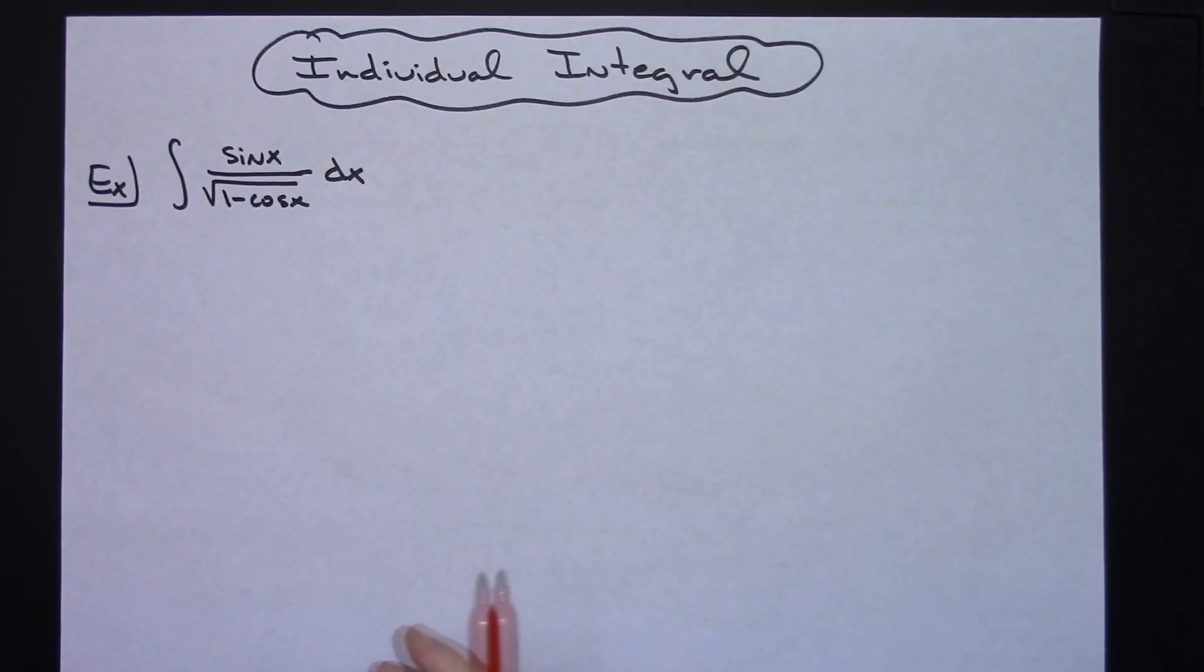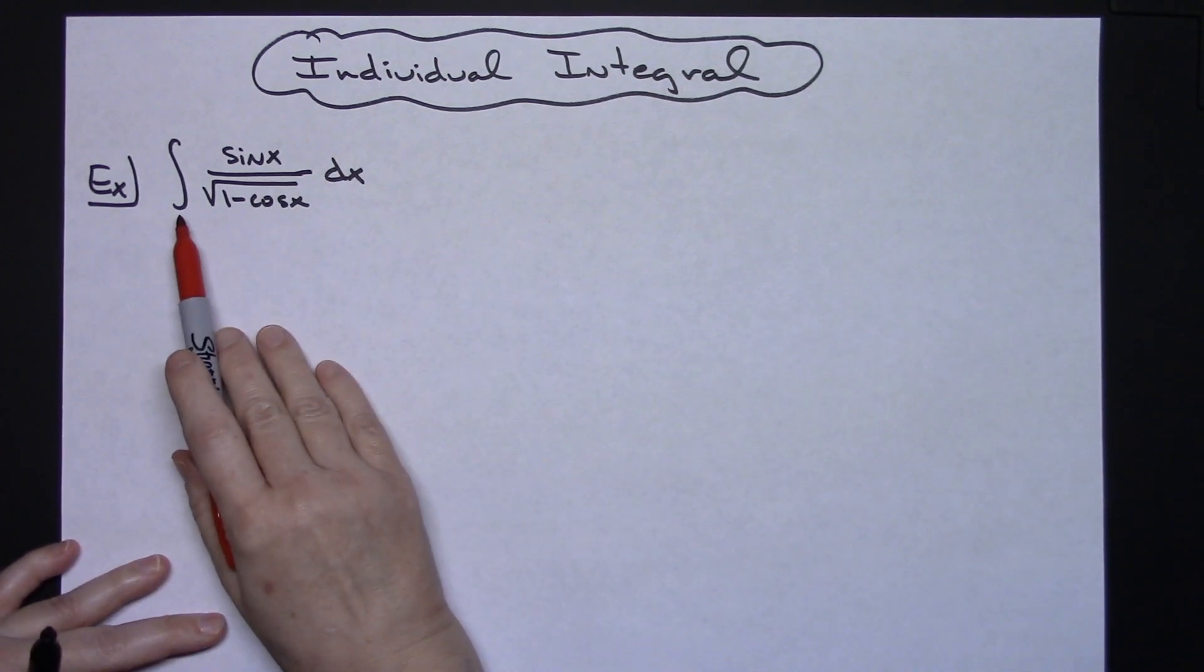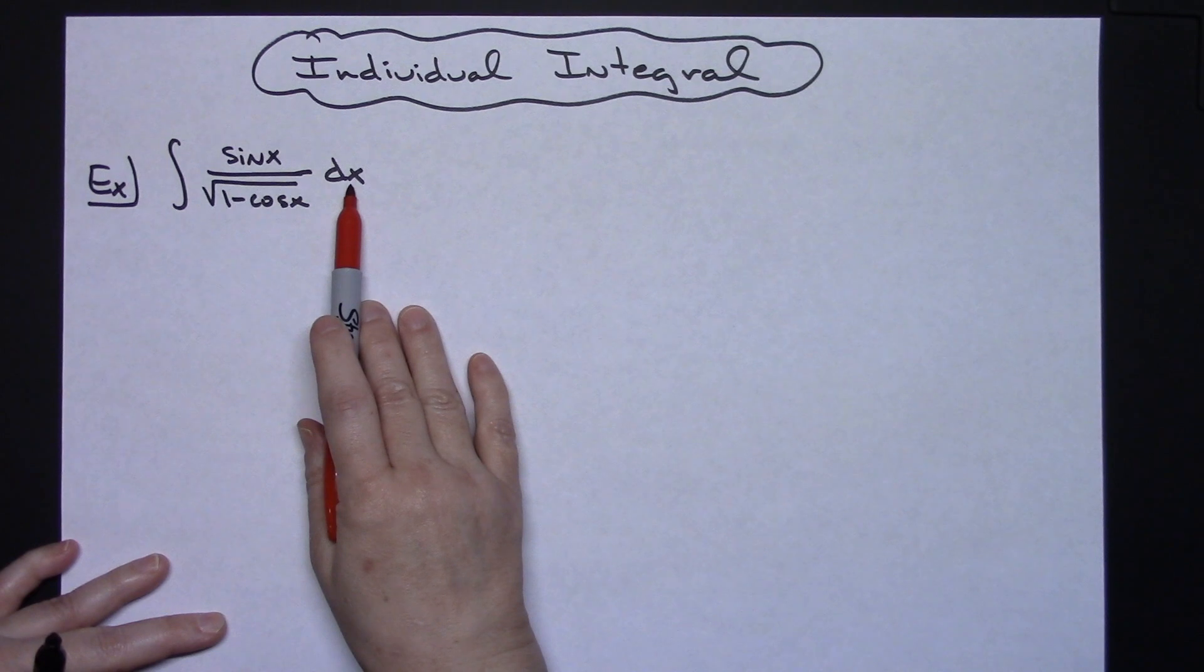In this video I'm going to be working out an individual integral. It's going to be a straightforward u substitution with absolutely nothing fancy about it. So I've got the integral of sine x over the square root of 1 minus cosine x dx.